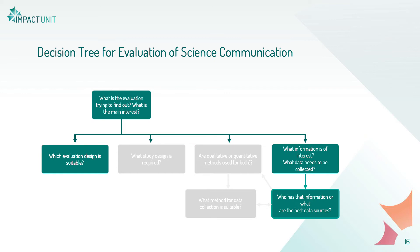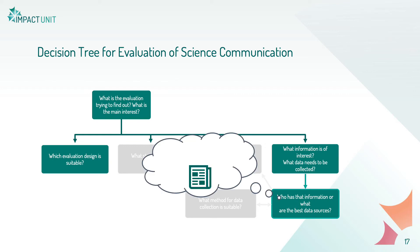Once you know what data you need to collect, you can ask yourself where you find that data. Is it hidden in texts or articles? Is it stored in databases you access through web analytics? Or do certain people have access to it? If you can choose from different sources, ask yourself which is easy to access — for example, adults are often easier to involve in an evaluation than young children — and which source offers the most valid information.